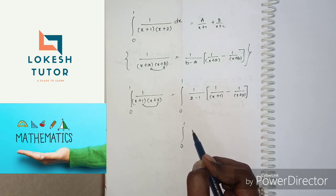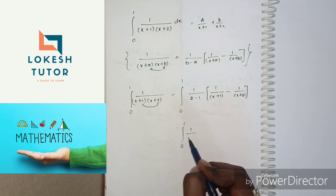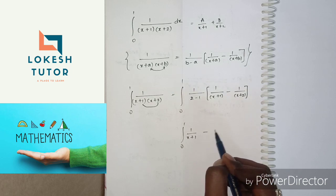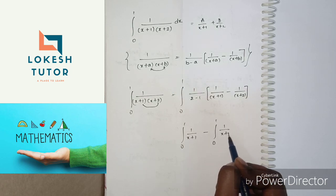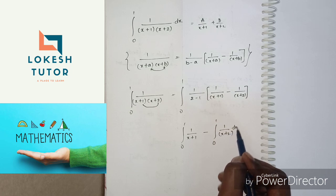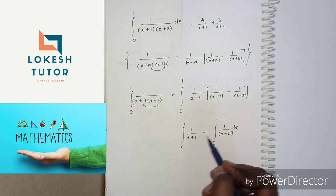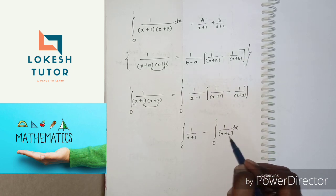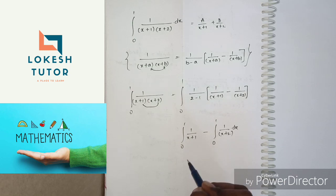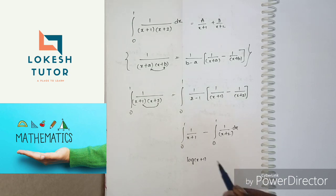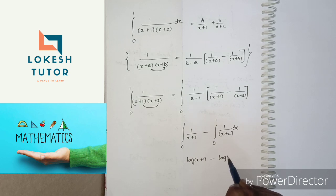Integral 0 to 1, 1 by (x plus 1) minus integral 0 to 1, 1 by (x plus 2) dx. This gives log of (x plus 1) minus log of (x plus 2).